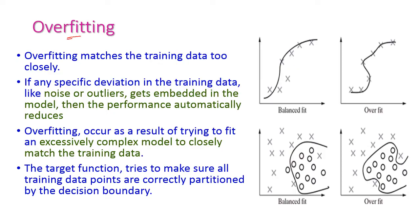The opposite of underfitting is overfitting, meaning this particular fitting matches the training data too closely. In the diagram, this is the balanced fit and this is overfit. If there is any specific deviation in the training data — that is, if noise or outliers are included — then it gets embedded in the model. The noise or outliers become embedded in the model, hence performance will automatically reduce and the target function will become more complicated.